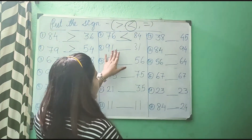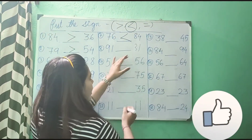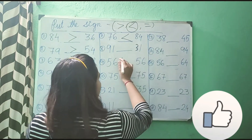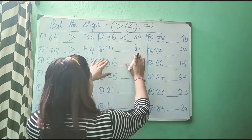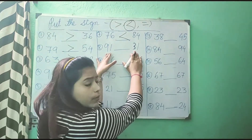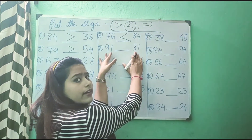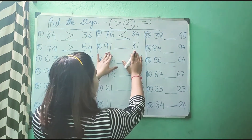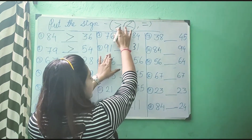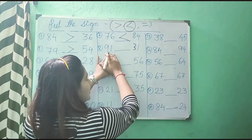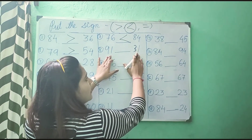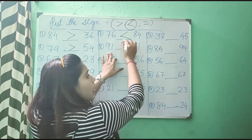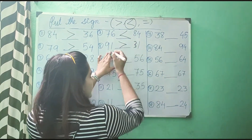Now again, see 91 and 31. Which is the bigger one — 91 or 31? 91, right? So we will put greater than as it is bigger than 31, that is why we will put greater than sign.